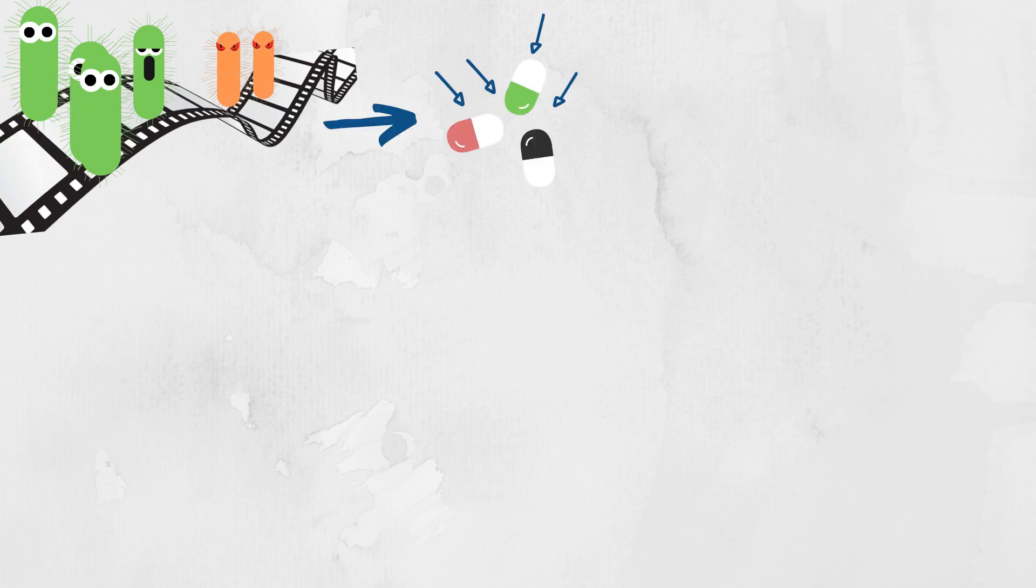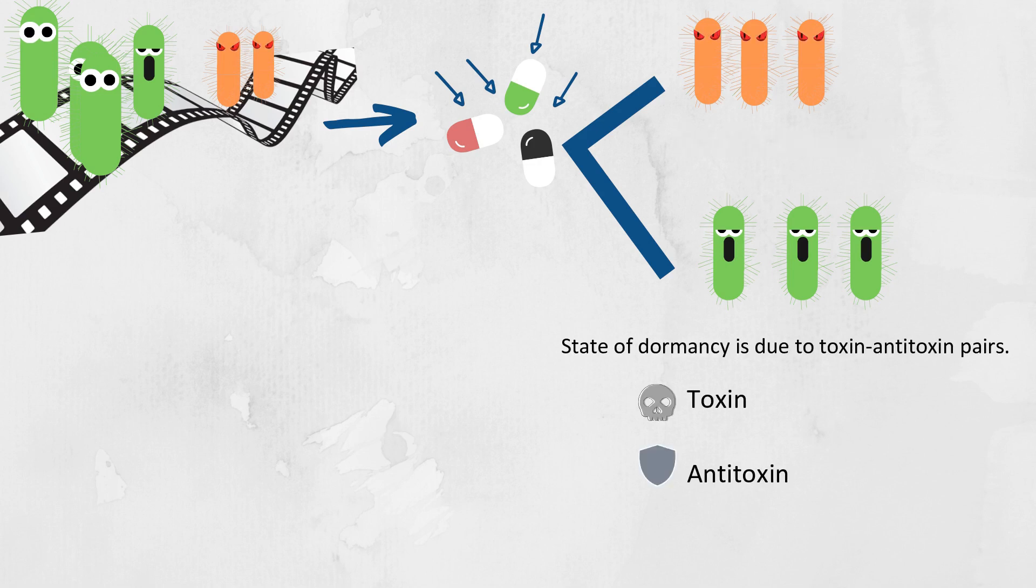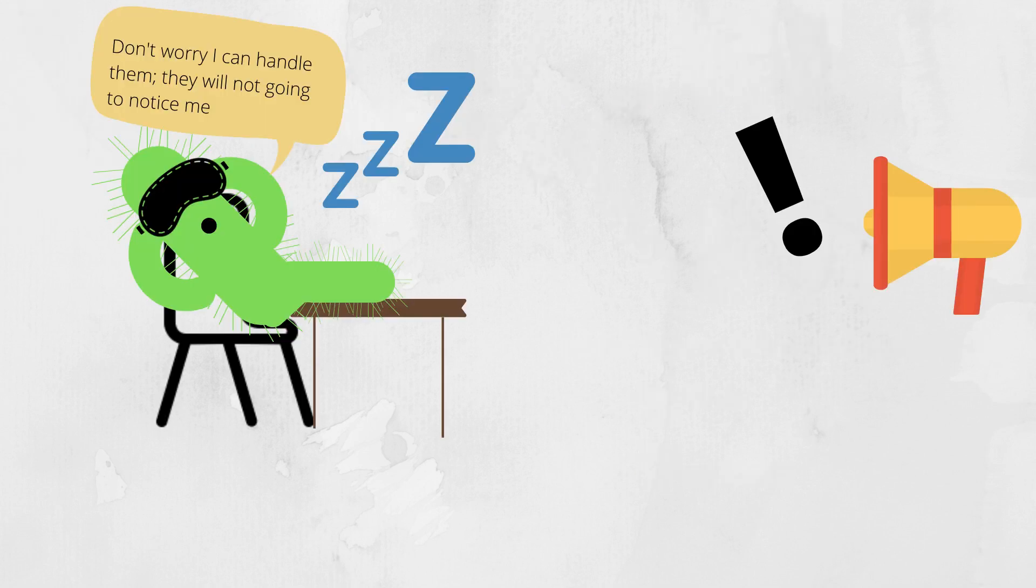The biofilm contains resistant bacterial cells and persister cells. When antibiotics are introduced in the biofilm, some bacterial cells will modify their genome and become resistant against antibiotics, and some bacterial cells remain dormant in the biofilm. And the state of dormancy is due to toxin-antitoxin pairs, which enable cells to escape the effects of antibiotics.